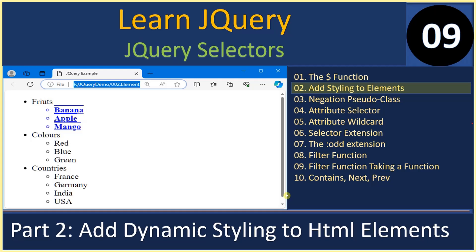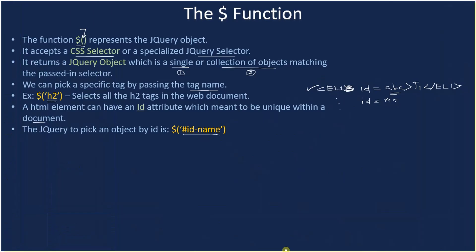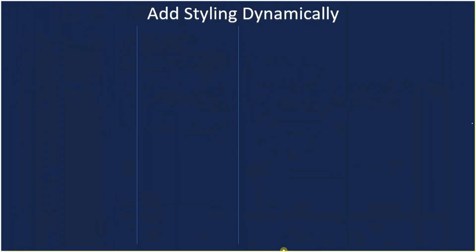Hello friends, welcome to the jQuery tutorial. You are at the second part of the sub-series. In this video we are going to see how to add dynamic styling to HTML elements. With jQuery we can add CSS style at runtime to any HTML element.